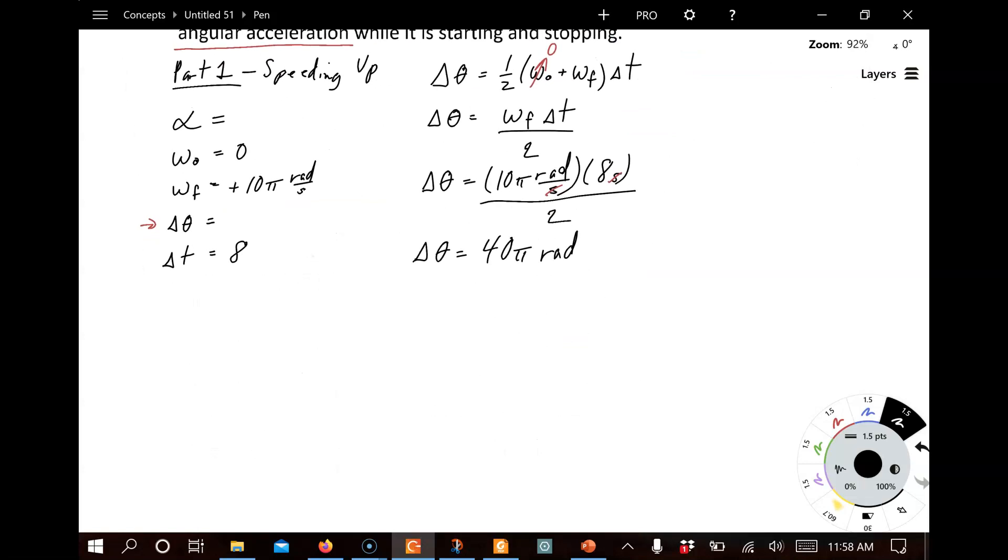All right. For the second part, we're going to do the same process here for part two. Now, we're slowing down. Because we stopped the dryer, because we need to go ahead and grab a sock. All right. Same thing. It's still constant acceleration. So, we're going to have the same five.